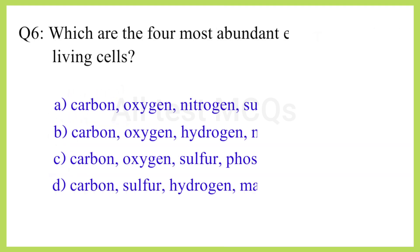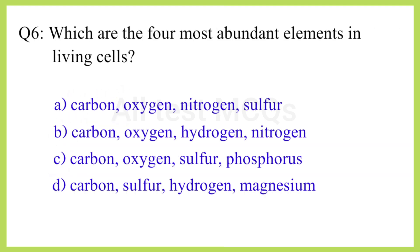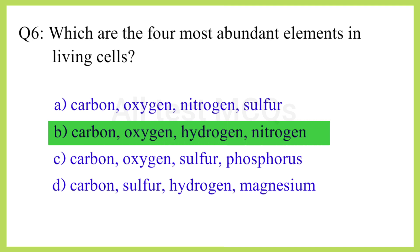Q6. Which are the four most abundant elements in living cells? The correct answer is option B: Carbon, oxygen, hydrogen, and nitrogen.